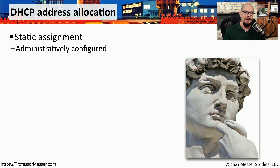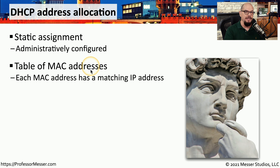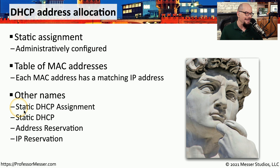Instead of randomly assigning an IP address from an available pool, we can also configure our DHCP server to assign a static IP address. This is especially useful if you have a server and you would like that server to have exactly the same IP address every time it starts. You would add the MAC address of that server to the DHCP configuration and assign it a matching IP address. Each time the server makes a request to the DHCP server, the MAC address is identified and exactly the same IP address and configuration is provided every single time. You may see this referred to as a static DHCP assignment, static DHCP, an address reservation, or an IP reservation.